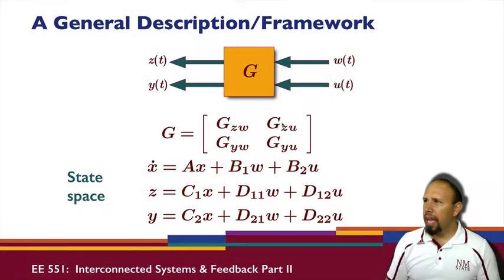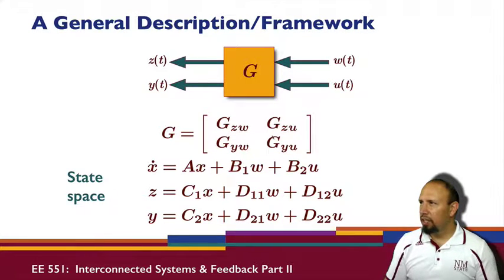In general, we may have a framework like this, where I have different kinds of inputs entering in and different kinds of outputs into my system. In which case I can have a multi-block transfer function. So W would be, for example, disturbances, noises that enter my system. Those are separate from U, which is the control signal.